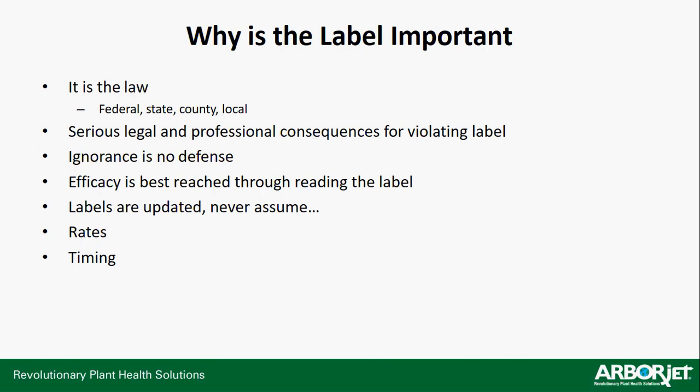Ignorance is no defense. Even without checking, if you go out and make an application that's off-label relative to any county or local law, that doesn't work as a defense — you're still going to get slapped with a fine, if not have your license taken. Labels are updated, so never assume that a label from last year is the current label. For ArborJet products you can always head to the website, but there are also other websites like CDMS that carry all the up-to-date labels. You'll also find rates and proper timing for when to apply your products.